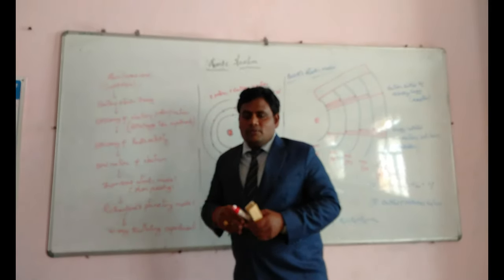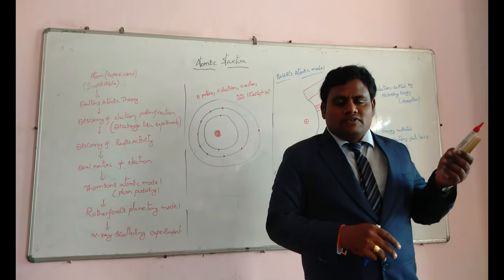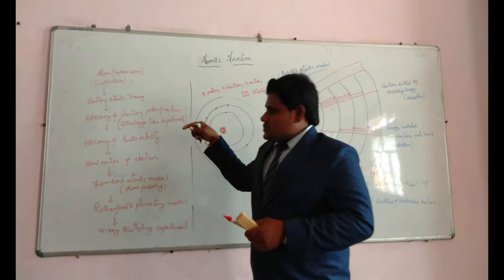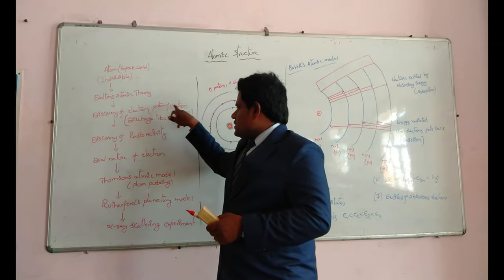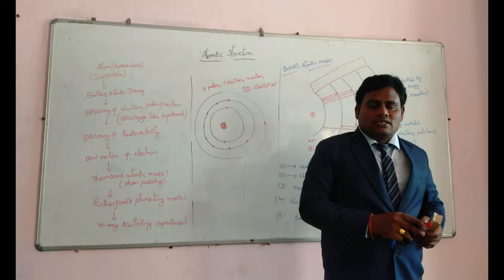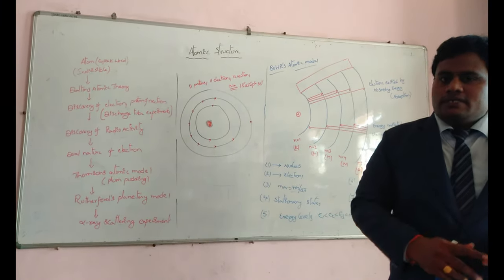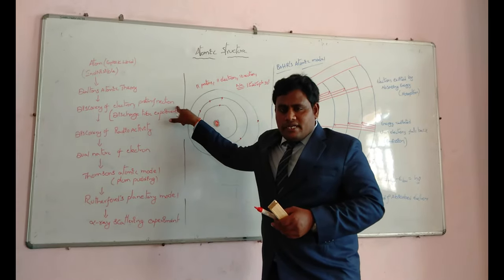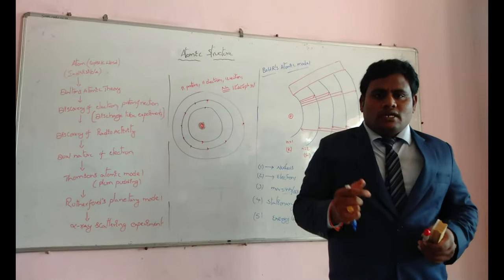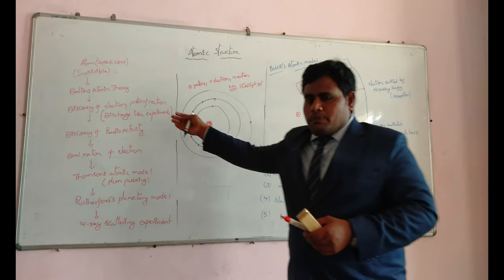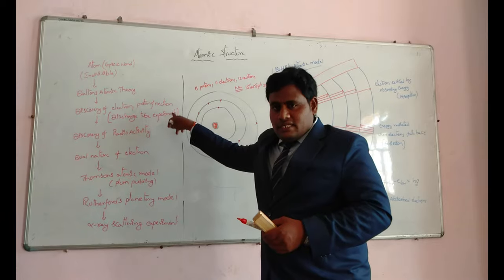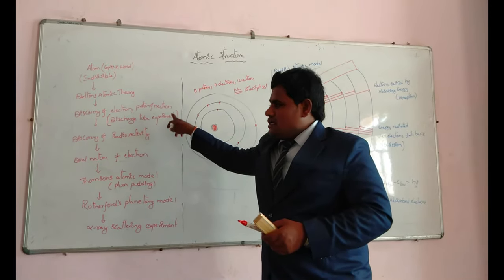Michael Faraday proved that an interaction exists between matter and electricity. Because of these experiments, after many days, the discovery of electron, proton, and neutron took place by scientists like J.J. Thomson, Goldstein, and Chadwick respectively. This means atom is not indivisible — it is divisible. It contains many other particles known as nucleons and fundamental particles like electron, proton, and neutron.